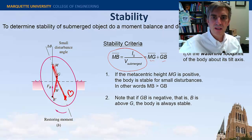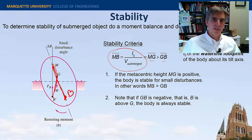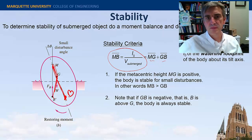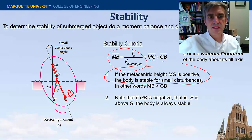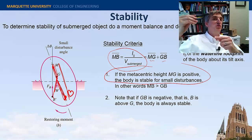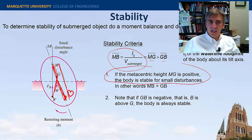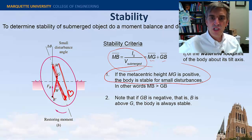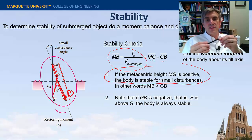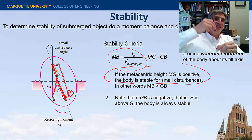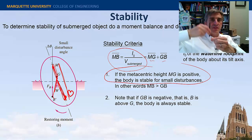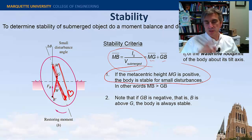All right, so our stability criteria is this. If the metacentric height, MG, is positive, the body is stable to small disturbances. In other words, you can look at this graph and convince yourself that this statement is basically saying that if this distance MB is larger than GB, that means M is above G, it'll be stable. The other thing is that if GB is negative, in other words, if the buoyancy force is above the center of gravity, so if the center of pressure is above the center of gravity, that's also a stabilizing effect, and I'll show you an example of that in a minute.